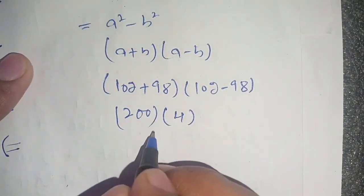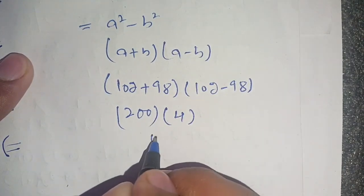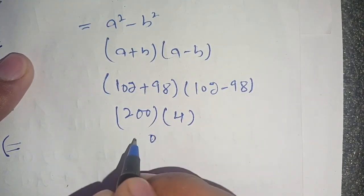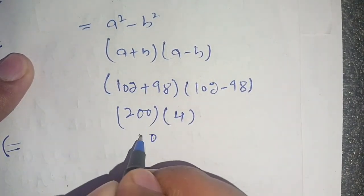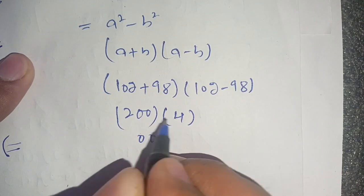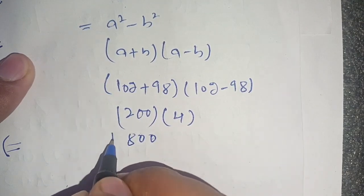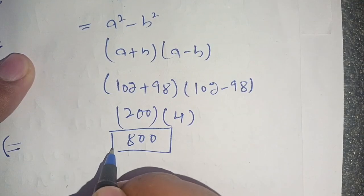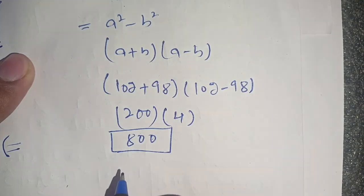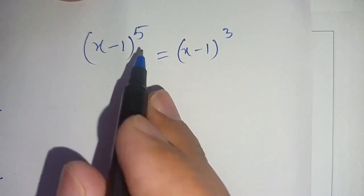When we multiply 200 by 4, we get 800. Thus the required value of 102 squared minus 98 squared is 800.